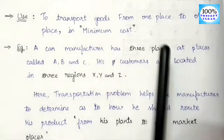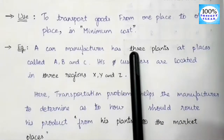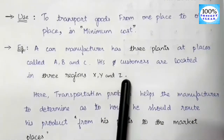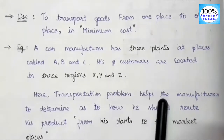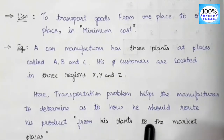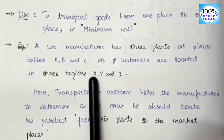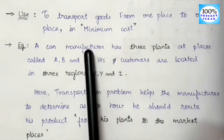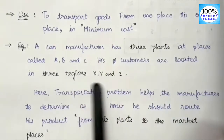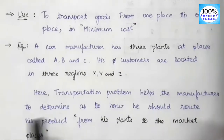The three plants are located at places called A, B, and C, and his customers are located in three regions: X, Y, and Z. The transportation problem helps the manufacturer determine how he should route his product from his plant to the marketplace. Since his plants and customers are in different locations, he must transport his manufactured goods to the customers' area.